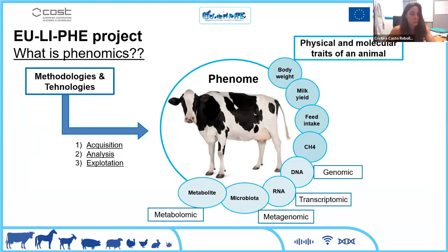What is the phenome? We can define the phenome as all the physical and molecular phenotypes that we can measure in an animal — for example, body weight, milk production, and also the genome, the metagenome, and other biological attributes from the animal.